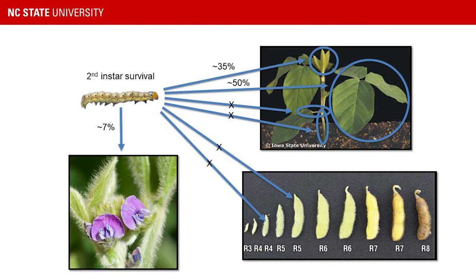The first student I had looked at what a corn earworm likes to eat. We took tiny second instar larvae and force-fed them different tissue types. She found that second instar larvae performed better on some tissues: 35% could survive to pupation on newly emerged trifoliates, 50% on fully expanded trifoliates, only 7% on blooms, and on petioles, stems, R5 and R4 pods, they couldn't survive at all.